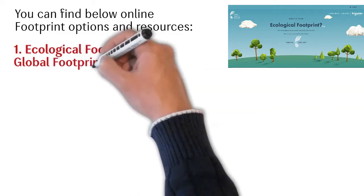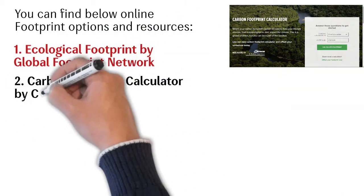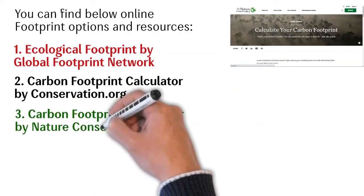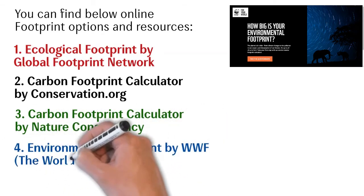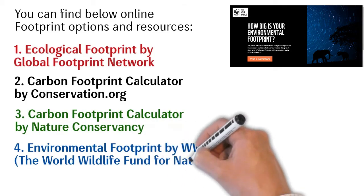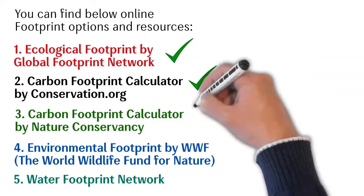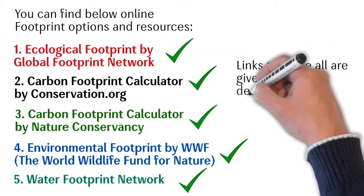The available calculators include: the Ecological Footprint by Global Footprint Network, the Carbon Footprint Calculator by Conservation.org, the Carbon Footprint Calculator by Nature Conservancy, the Environmental Footprint by WWF — the World Wildlife Fund for Nature — and the Water Footprint Network. This list is not exhaustive, but it gives a fair idea about the variety of footprints and online calculator options available. Links to all of these are in the description.